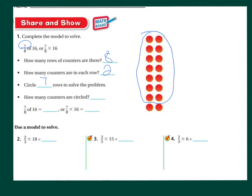How many counters are circled? One through fourteen. So, the answer to that is fourteen. Seven-eighths of sixteen, or seven-eighths times sixteen, is fourteen. Okay, you can do the same here — use the models to help you on the next ones.